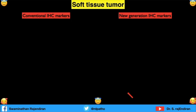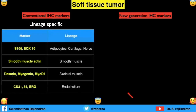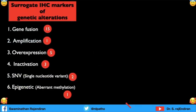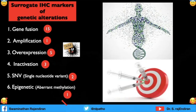In soft tissue tumors, a lot of changes are happening. Conventional IHC markers are lineage-specific — for example, markers of adipocyte, SOX10 or S100 are markers of smooth muscle, and SMA. The new generation markers are molecular event-specific. Depending upon genetic alteration, there are six major categories: gene fusion, amplification, overexpression, inactivation, single nucleotide variants, and aberrant methylation. Most of these markers are also theranostic — important for targeted therapy.